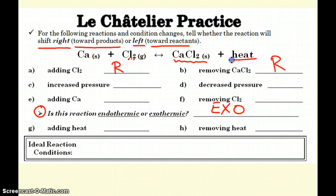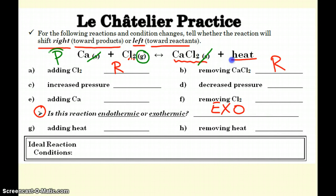Pressure. When gas particles collide, they create pressure. So if we're looking at pressure changes with a reaction, we need to be looking at the gaseous parts of the reaction. Calcium is a solid — not interested in that. Chlorine is a gas, so that's important. Calcium chloride is a solid — not interested in that. Looking at this reaction, there's only gas on the reactant side. So pressure is only going to affect that side. I put a P for pressure on the reactant side. So when I increase the pressure, pressure acts as a reactant — when I increase a reactant, I cause it to shift to the right towards the products.